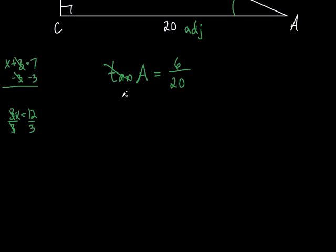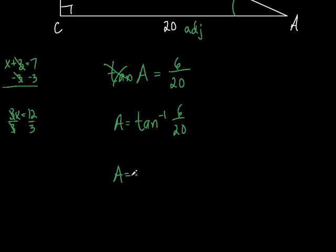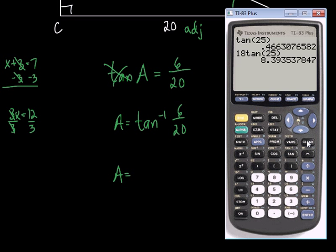So A equals tan⁻¹(6/20). Rounded to the nearest tenth, that's 16.7 degrees. We actually found what that angle is — 16.7 degrees. You could have never done that before today without knowing trig, which I think is pretty interesting.